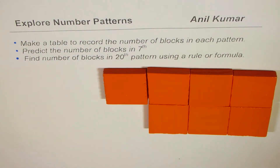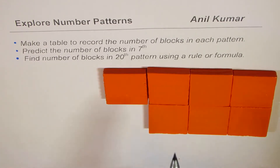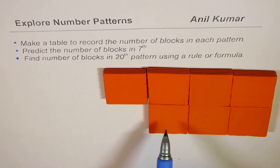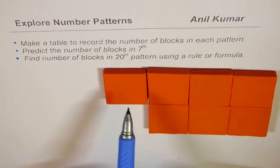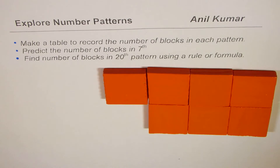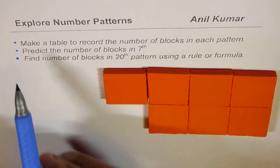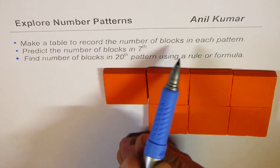I'm Anil Kumar, welcome to my series on exploring number patterns. This series is extremely good for junior school students, especially from grade 3 to grade 6. We'll actually create a few patterns, record the number of blocks in each, and then correlate them with some kind of formula so that we can predict how many blocks will be there in any given pattern. In short, we'll make a table to record the number of blocks in each pattern.